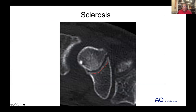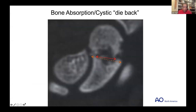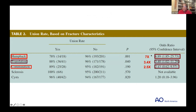Sclerosis didn't make that much of a difference, neither did bone absorption or cystic die-back. Humpback deformity had seven times the incidence of non-union. Translation had three and a half times the incidence of progressing to non-union. Comminution had two and a half times the incidence of progressing to non-union.